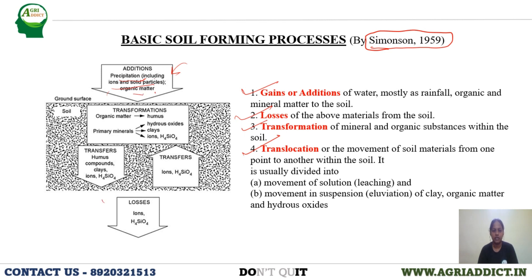Also some solid particles and organic matter are added into the soil. Next is losses. Losses mean materials going out from the soil — that is negative for us. Whichever materials enter into the soil can also be lost, like ions — bases or silicate ions — through leaching.